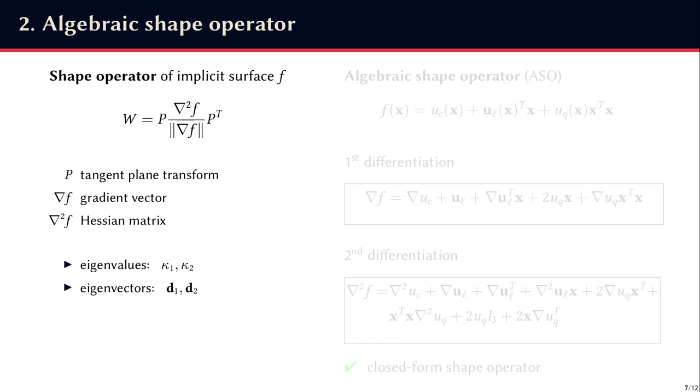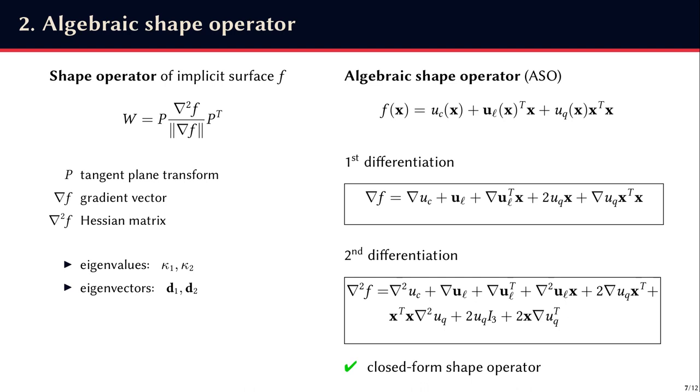For the second contribution, we must compute the shape operator of a scalar field F, which is given by this matrix W. So we need to compute the gradient vector Nabla F and the Hessian matrix Nabla^2 F. And in the end, the principal curvatures are the eigenvalues of the matrix W, and the principal directions are the eigenvectors.